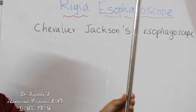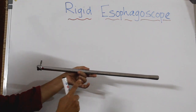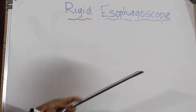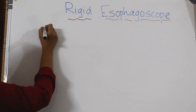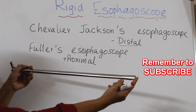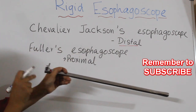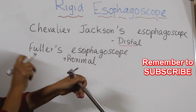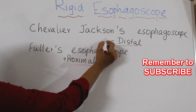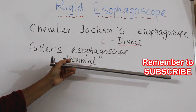This is a rigid esophagoscope. Depending on illumination — whether distal or proximal — we have two named types. One is Chevalier Jackson, which has illumination at the distal end. The other is Fuller's, which has illumination at the proximal end. So: C for D — Chevalier Jackson is for distal illumination, and Fuller's is for proximal illumination.